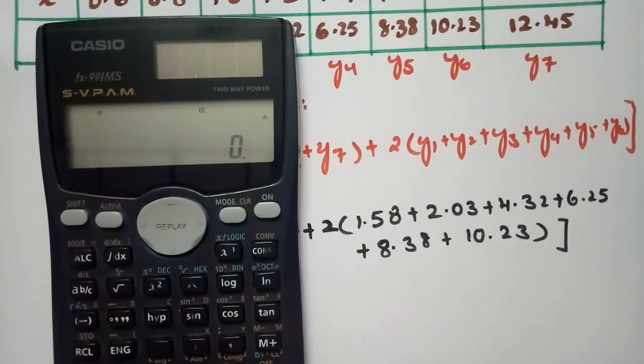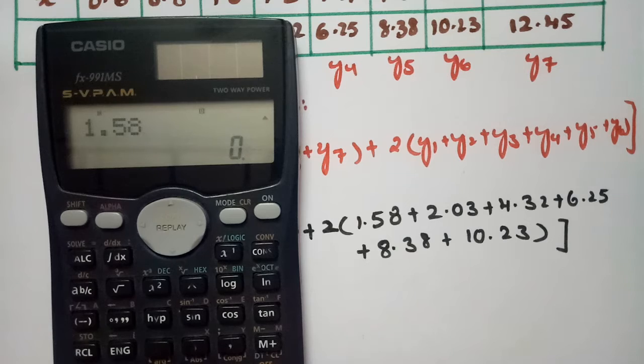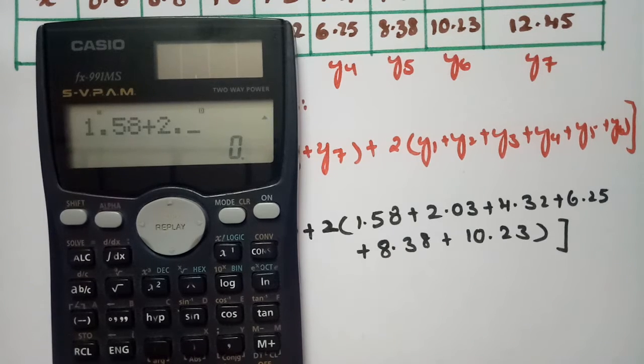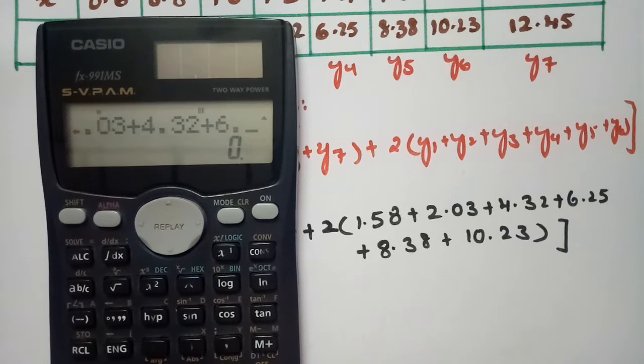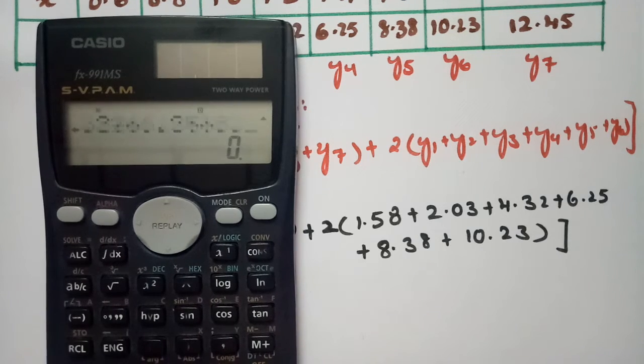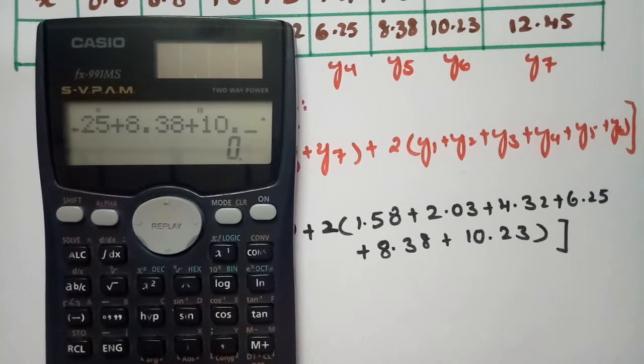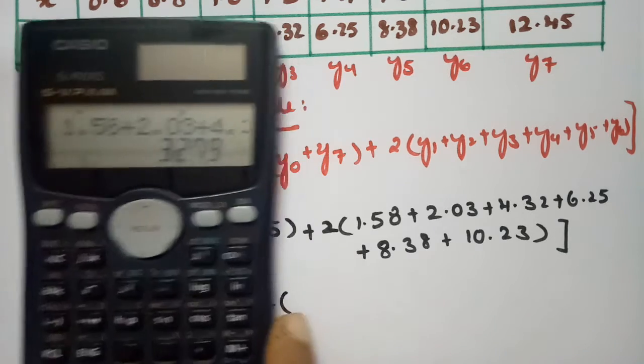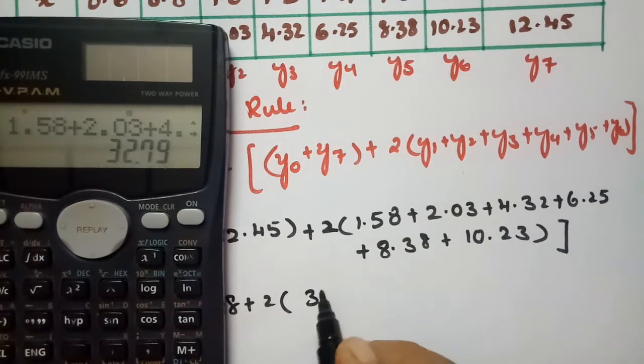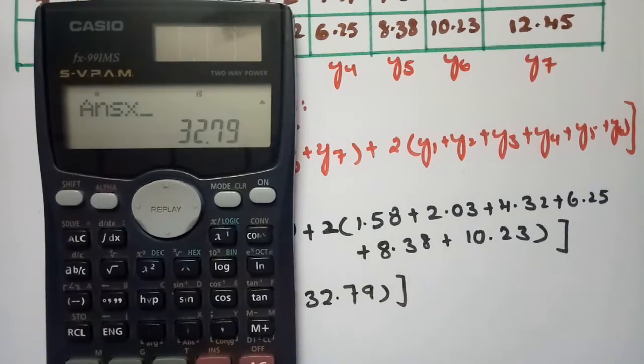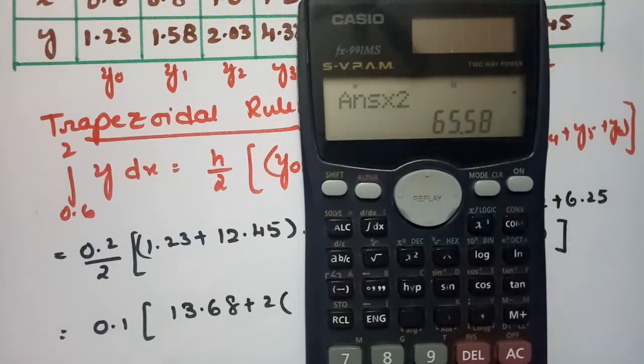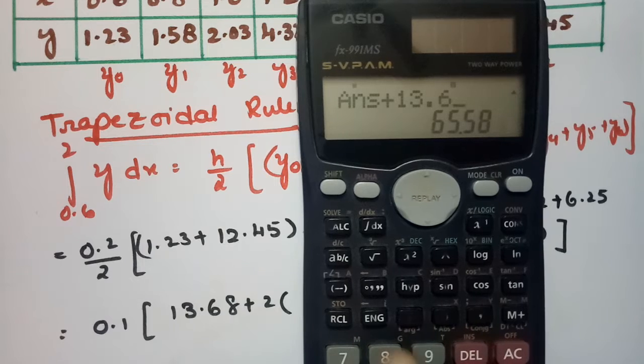I am going to add all these: 1.58 plus 2.03 plus 4.32 plus 6.25 plus 8.38. We multiply this by 2, then add with 13.68, and multiply by 0.1.